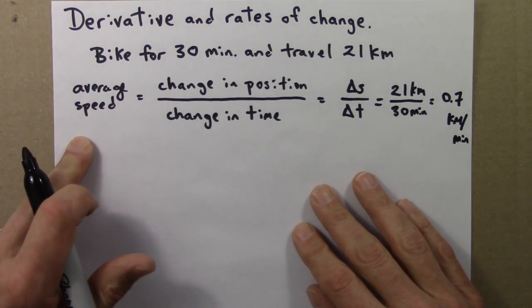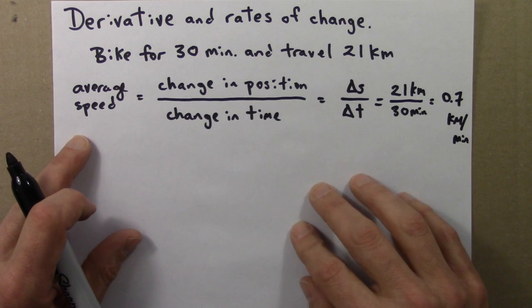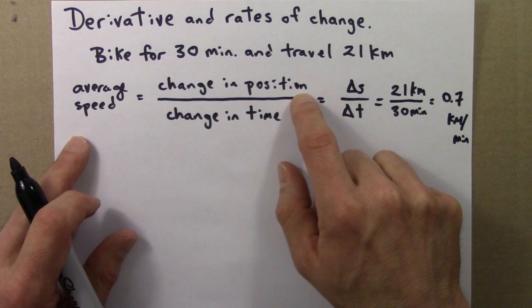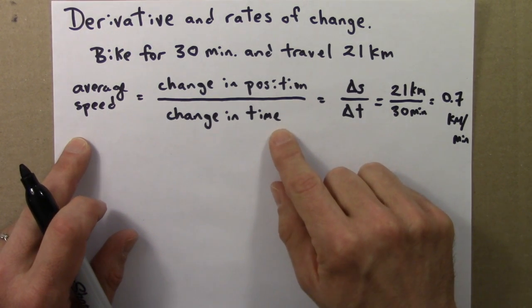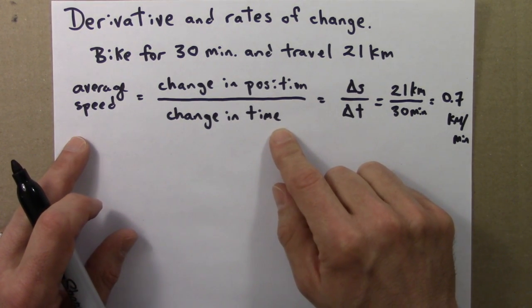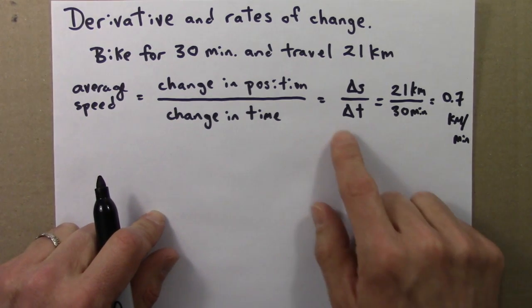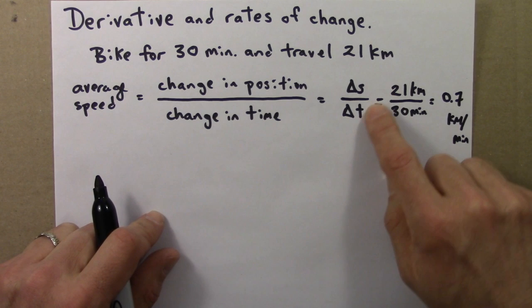So, average speed, how fast you were going during your 30-minute bicycle ride, well, that's the change in position, how far you've traveled, over the change in time. And that means how much time has elapsed, how long were you bicycling for. In symbols, that's often written delta S over delta T.